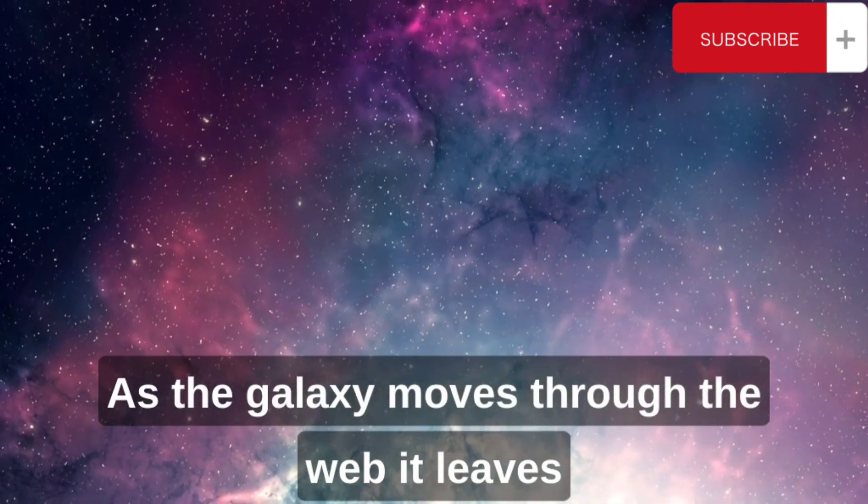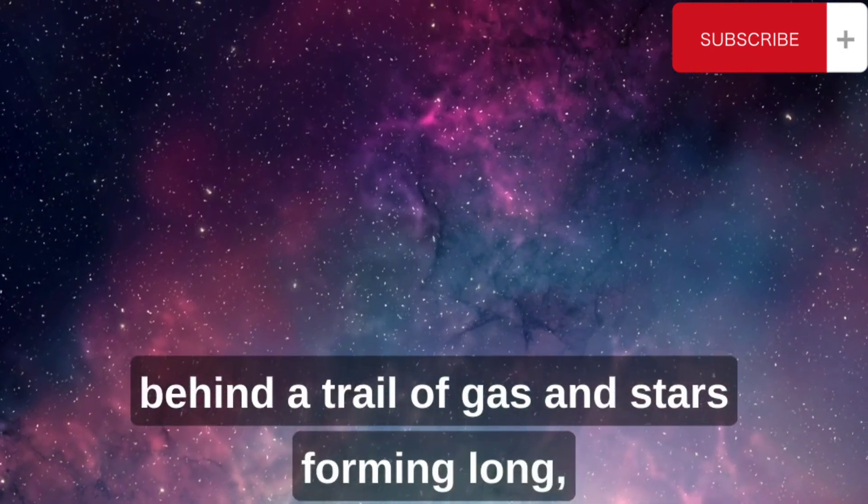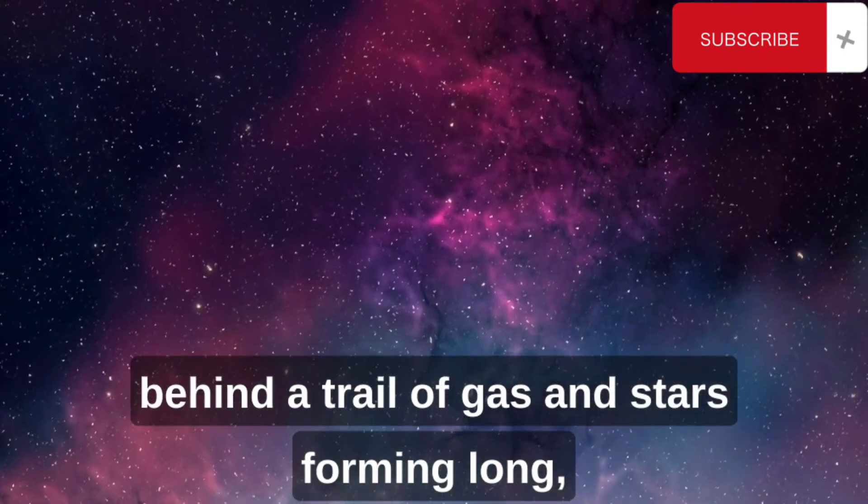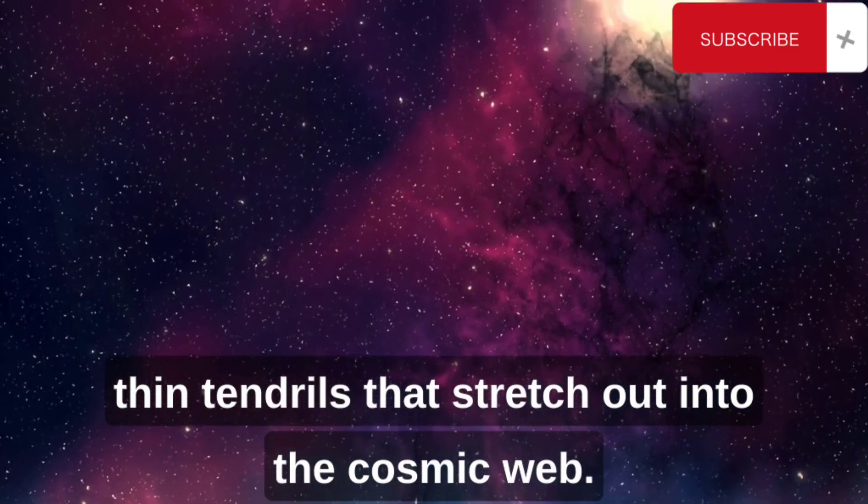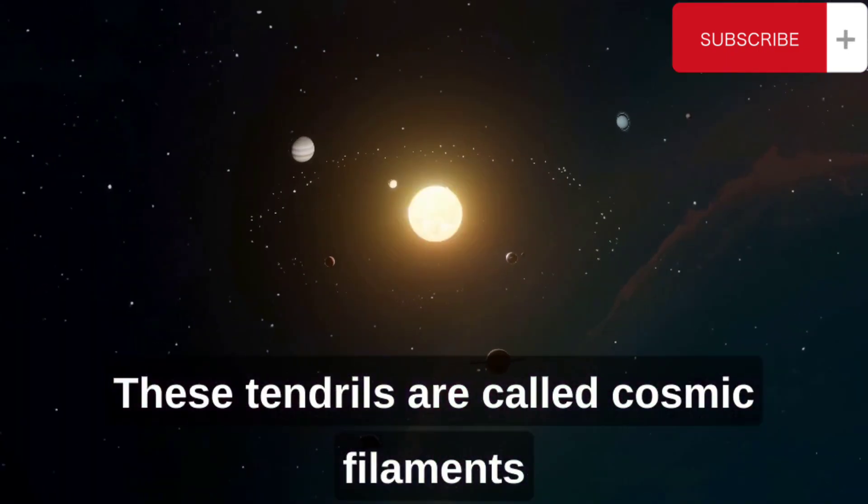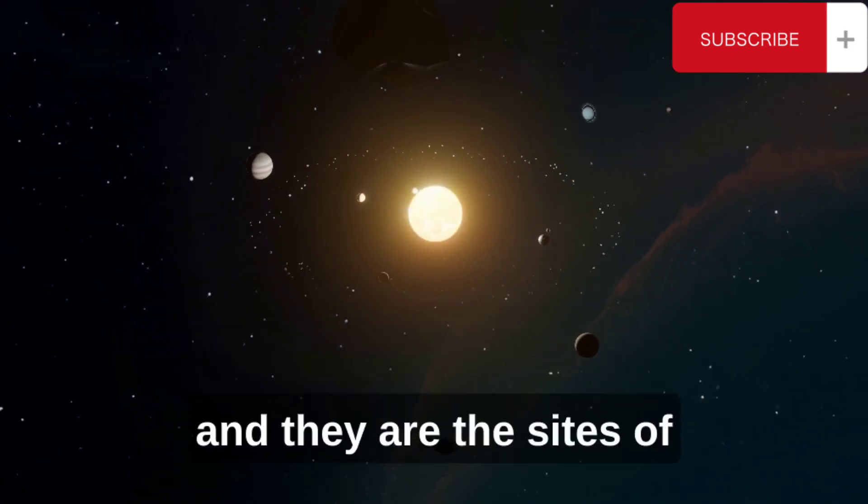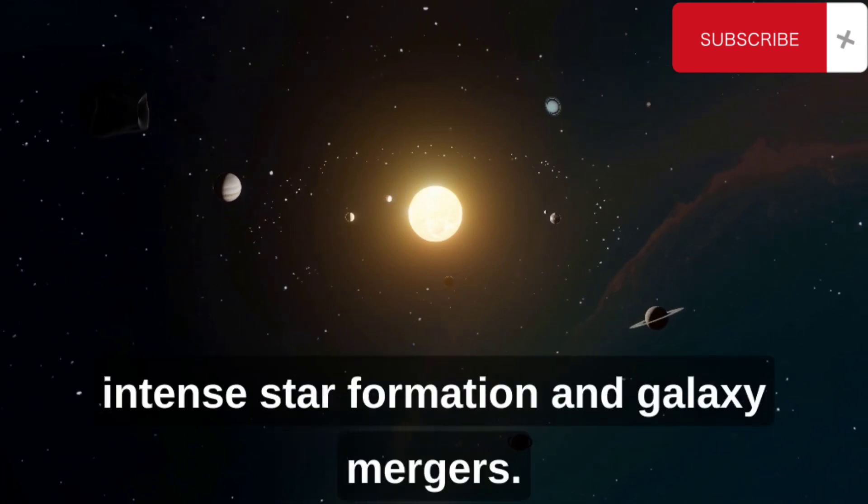As the galaxy moves through the web, it leaves behind a trail of gas and stars, forming long, thin tendrils that stretch out into the cosmic web. These tendrils are called cosmic filaments, and they are the sites of intense star formation and galaxy mergers.